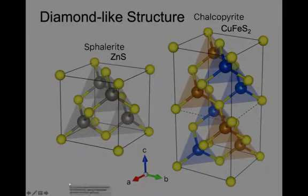Sphalerite and chalcopyrite, and many other sulfides, use a diamond-like structure. In diamond, all the atoms are carbon, and each atom is coordinated with four others in tetrahedral coordination.